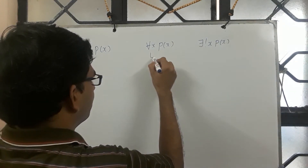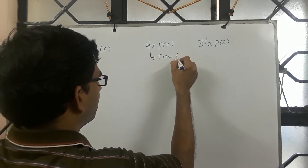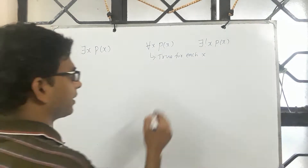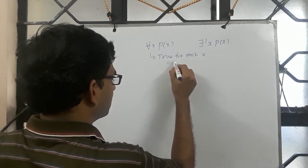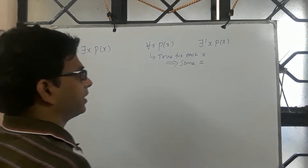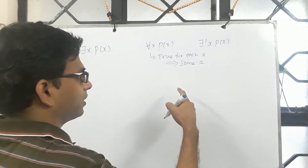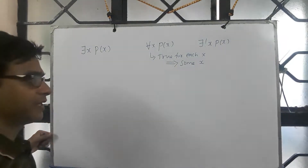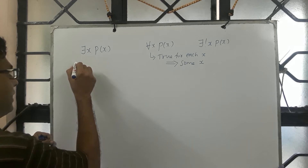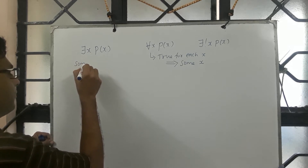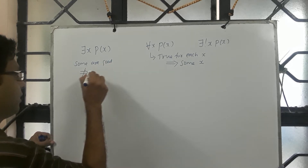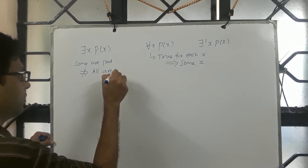If something is true for all of them — true for each x — this implies that it is true for some x. If I say all boys are good, that means some boys are good; there exists at least one good boy. And if I say some are good, this need not imply all are good.